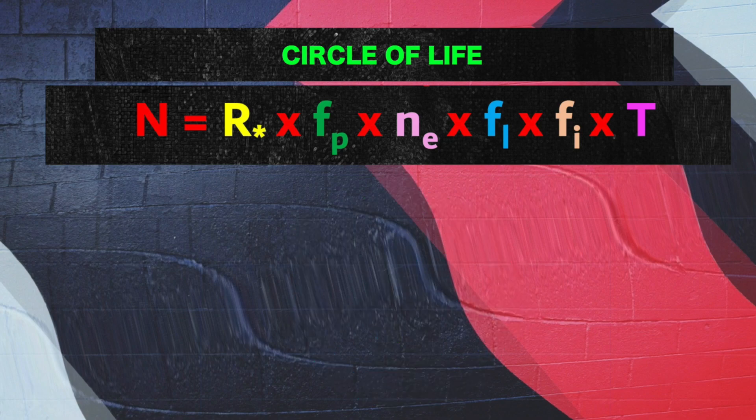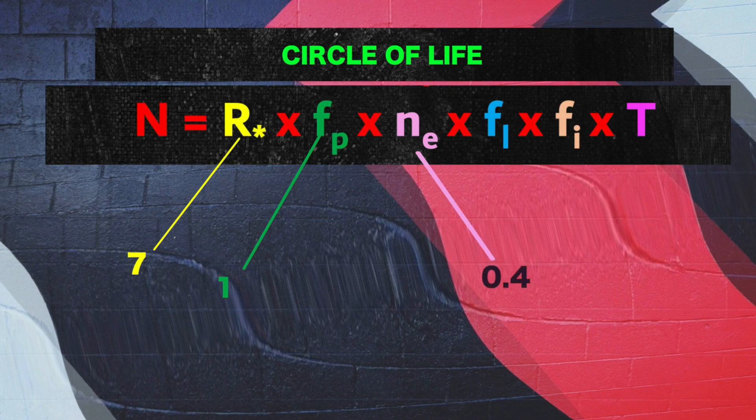We have values for some of these variables. The rate of star formation is 7 stars per year. Pretty much all stars have planets, so that fraction should be 1. Only about 0.4 planets per solar system lie in the habitable zone. Plugging in those numbers, our equation looks like this.